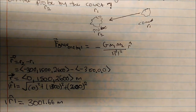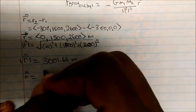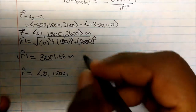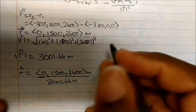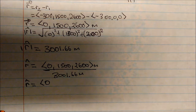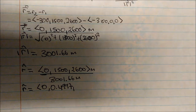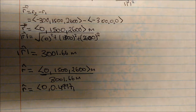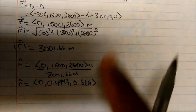Now that I've found the magnitude of R, I divide R by its magnitude to get my unit vector. So R-hat will be the vector (0, 1500, 2600) meters divided by 3001.66 meters. My unit vector will be 0 in x, because 0 divided by 3001.66 is 0; 1500 divided by 3001.66 gives 0.4997 in the y direction; and 2600 divided by 3001.66 gives 0.866 in the z direction.